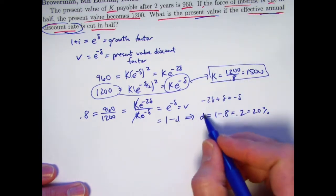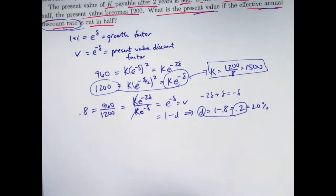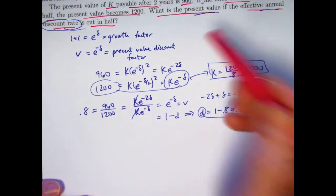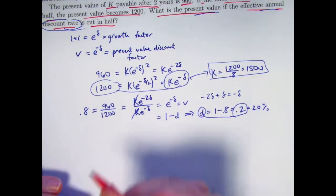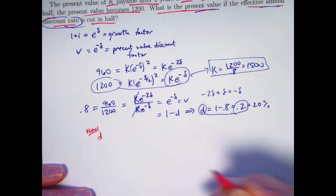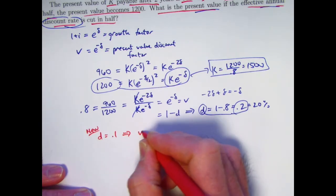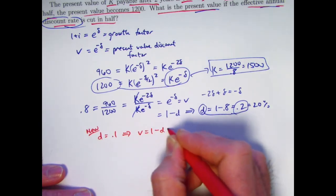So the discount rate, D, is 0.2. Now we're still not quite done. We have to now cut D in half to 0.1 and ask what the present value is in that case. So if we cut D in half, the new discount factor to 0.1, that will mean V is 1 minus D is 0.9.